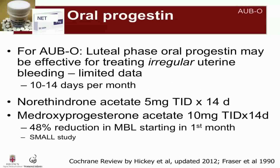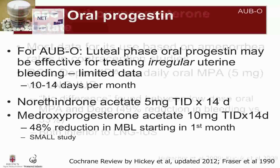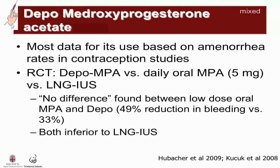For AUB-O, luteal phase oral progestins administered for 10 to 14 days of the menstrual cycle may be effective in treating heavy and irregular bleeding, though the data are quite limited. Administered during days 10 to 14 of the menstrual cycle, these progestins can reduce menstrual bleeding by up to 48 percent, although studies in this area are quite small. Looking at depo-medroxyprogesterone acetate, most data for its use are based on amenorrhea rates shown in the contraceptive literature. One study published in 2008 looked at treating women with AUB — a mixed population of AUB-E and AUB-O — with Depo-Provera, and showed no difference between low-dose oral medroxyprogesterone acetate and Depo, and that both were inferior to the levonorgestrel intrauterine system. One issue with using Depo-MPA is the unpredictability of response — women may still have irregular bleeding, and once given, it's hard to manage if the patient is not happy with that treatment regimen.